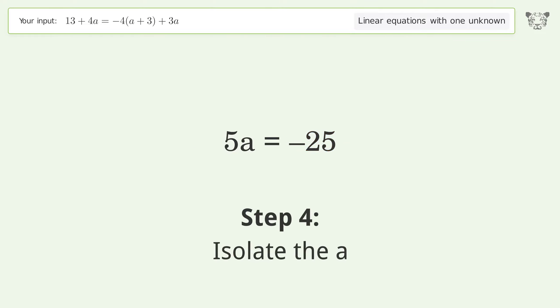To isolate the a, divide both sides by 5 and simplify the fraction.